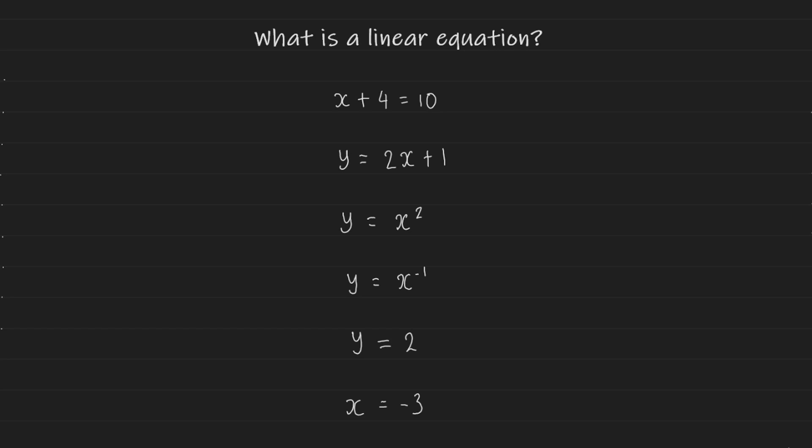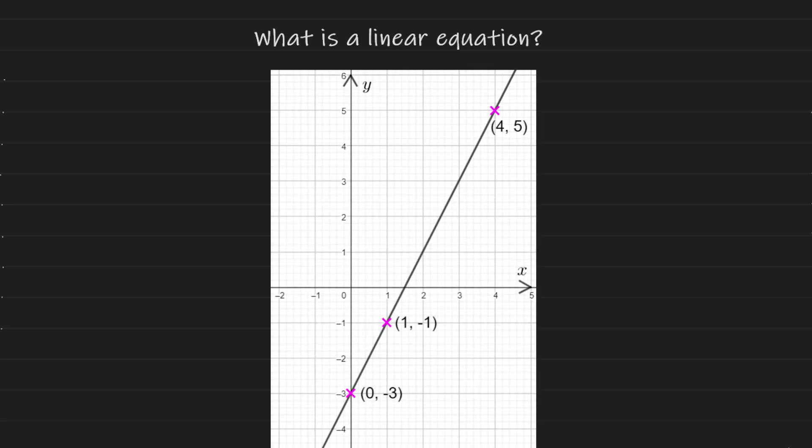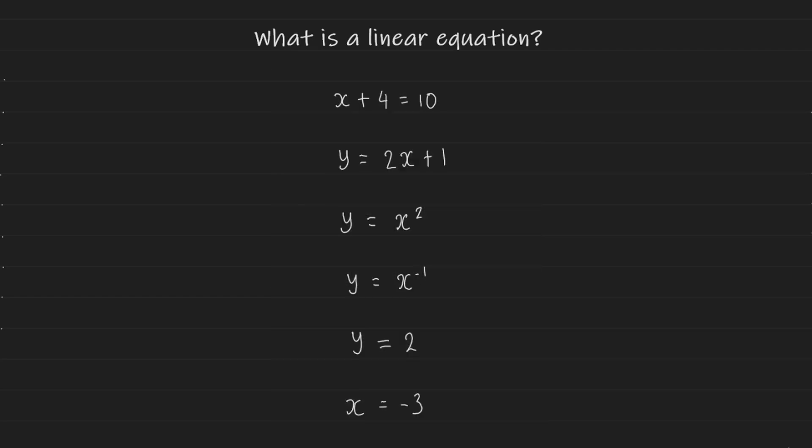An equation is linear if you plot it out on graph paper and it makes a straight line. That's where the word linear comes into play. So an equation is linear if you plot it out and it makes a straight line.